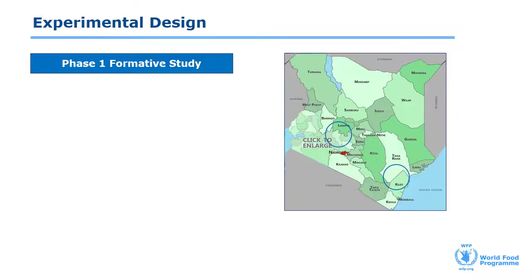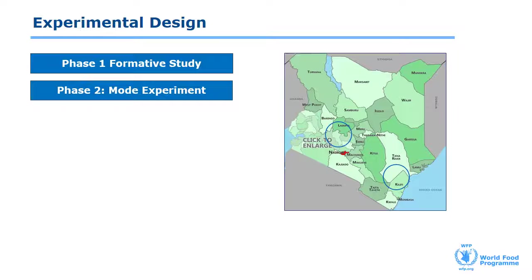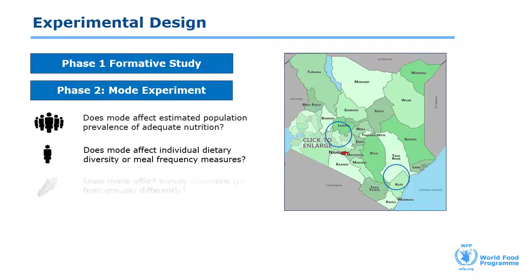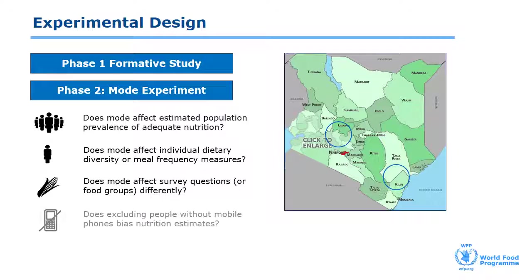Once the feasibility of reaching women was confirmed, we conducted a mode experiment to test whether different modes of data collection — face-to-face and CATI — resulted in different estimates of MAD and MDDW. Our key research questions were: does mode affect estimated population prevalence of adequate nutrition? Do we get different prevalence of MDDW and MAD when we use CATI versus a face-to-face survey? Does mode affect individual dietary diversity or meal frequency measures? Does mode affect survey questions or food groups differently? Does excluding people without mobile phones bias nutrition estimates? And what are the implications of these results for future data collection?